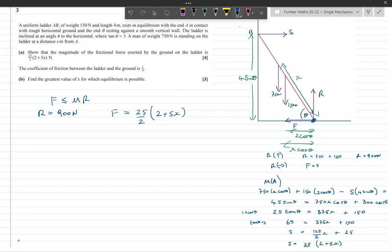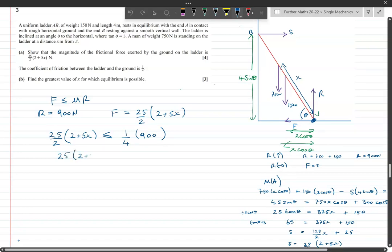So F, which is 25 over 2 times (2 plus 5x), is less than or equal to μ, which is a quarter, times 900. We can do various things with that. If I times through by 2, I'll have 25 times (2 plus 5x) and times this by 2 would mean I've got half of 900, which is 450.